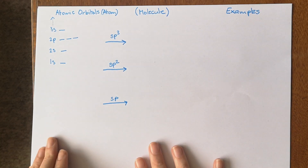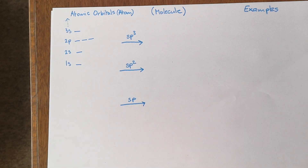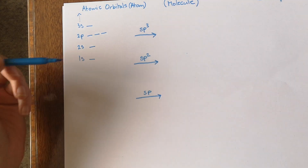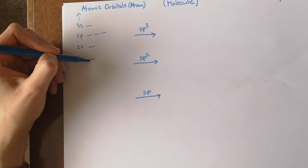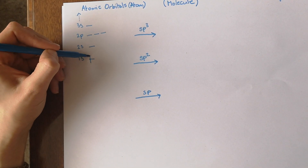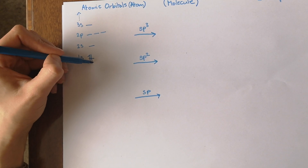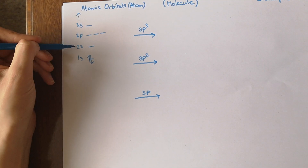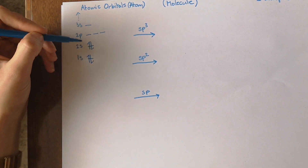Electrons are organized into orbitals in this order. If you have two electrons, they'll both go into the 1s orbital — that's the lowest energy orbital. If you have another two electrons, they'll go into the 2s orbital, the next lowest energy orbital.